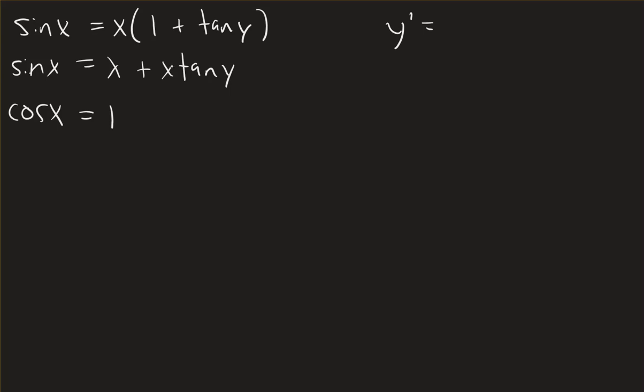And then on this part here, I'm going to have to use the product rule. So I can take the derivative of the first thing times the second thing, plus the derivative of the second thing, which would be secant squared y, times the first thing.